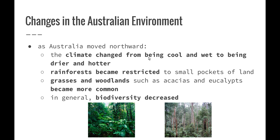What are some changes that have occurred in the Australian environment? Australia has moved northward from its original position when it was part of the supercontinent Pangaea, and then the smaller supercontinent Gondwana. As Australia has moved northward, the climate has changed from being cool and wet to being much drier and hotter, and we're noticing that now ourselves.